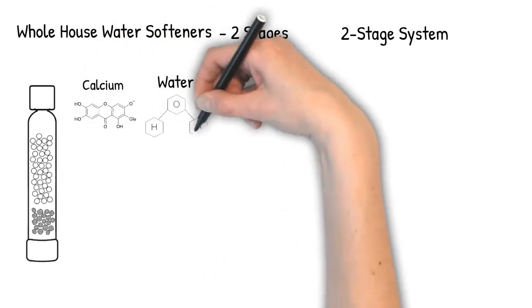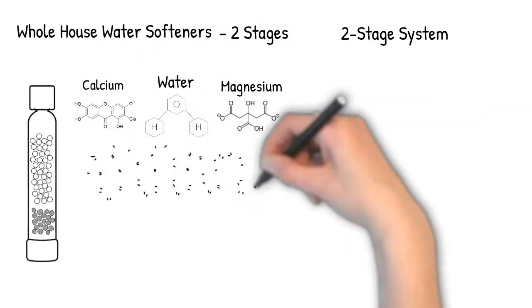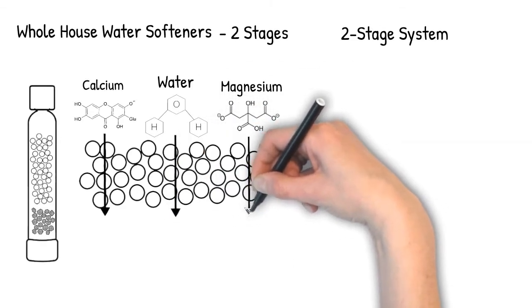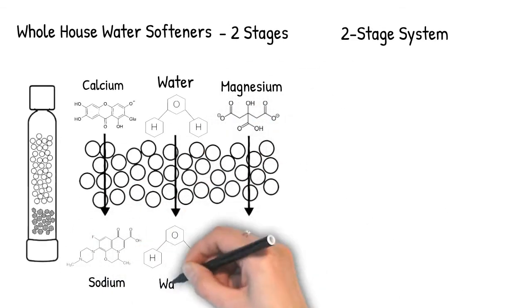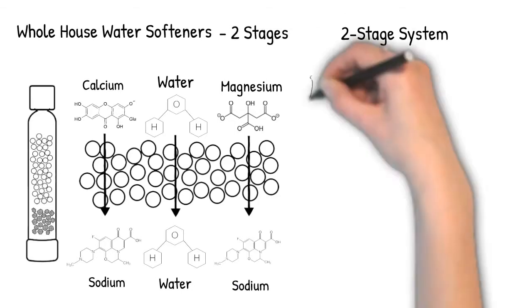The second stage is a synthetic resin in the form of small beads. These beads soften the water through a process called ion exchange, whereby the beads change the molecular structure of contaminants like calcium and magnesium into simple sodium as they pass over the beads, leaving the sodium to enter your home as well as chemicals like chlorine, ammonia, or hexavalent chromium.